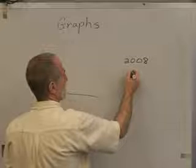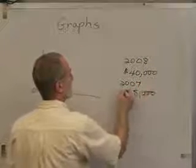Then we want to make sure we draw it to scale. Let's say we had sales in 2008 of $40,000 and in 2007 of $35,000. Now, we want to start at zero. If we have time, we always want to put it on the horizontal, early to late.